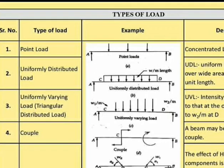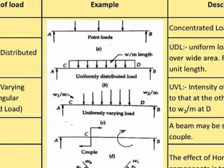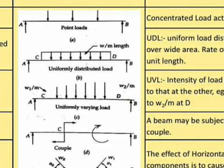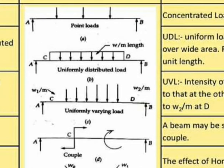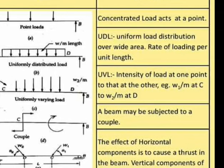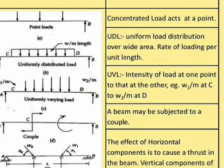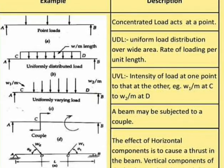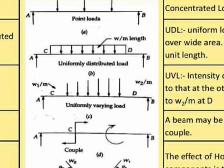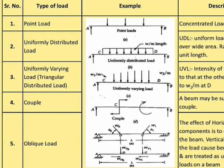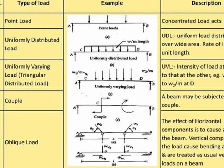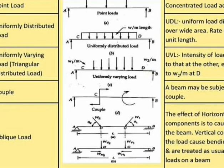The next type is uniformly distributed load, shown in figure b. The load acts at w per meter length — that is, the rate of loading per unit length is uniform. Next is uniformly varying load, which has a triangular distribution, as you can see in the figure.